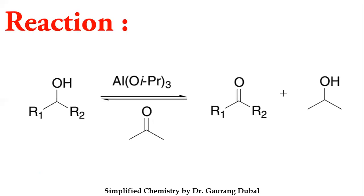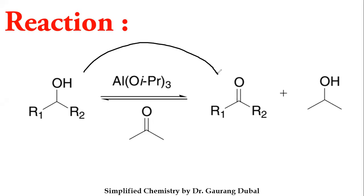Let us see the reaction. The reaction starts from the secondary alcohol — you can see OH is connected to a carbon which is connected to two different carbons, meaning it is a secondary alcohol. Now, if you use acetone as a solvent and react with the catalyst aluminum isopropoxide, that will convert your secondary alcohol into the ketone. You can see R1 and R2 with OH is converted into a carbonyl double bond — that is the ketone.